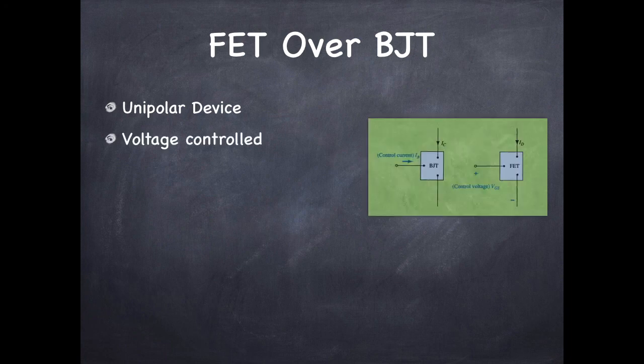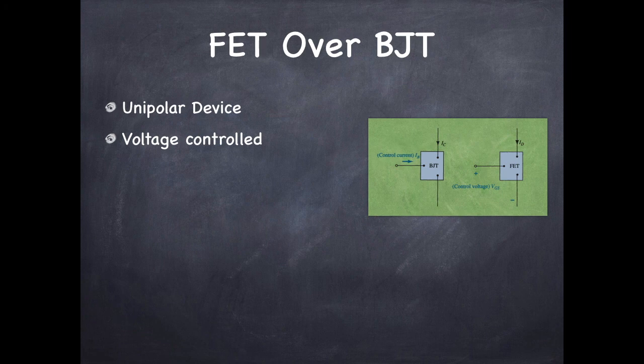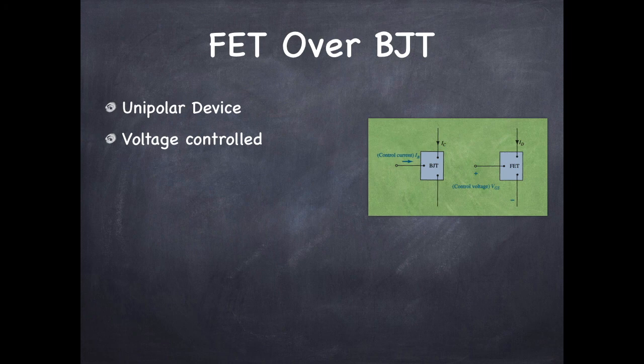BJT is a current control device whereas the FET is a voltage control device. You can see in the figure, in BJT the input current, that is the emitter current, controls the output current which is the collector current. In FET the gate voltage controls the output current. So voltage is controlling the output current, so it is called a voltage control device.